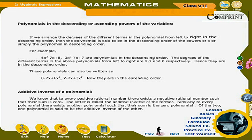Additive inverse of a polynomial: We know that for every positive rational number, there exists a negative rational number such that their sum is 0; the latter is called the additive inverse of the former. Similarly, for every polynomial there exists another polynomial such that their sum is 0. One polynomial is said to be the additive inverse of the other.